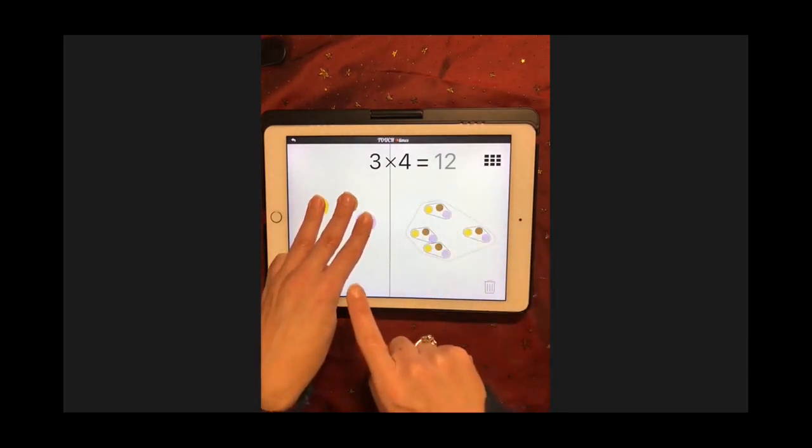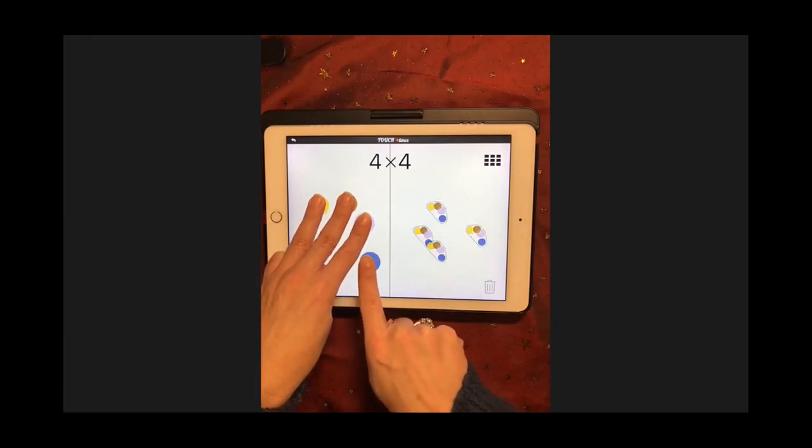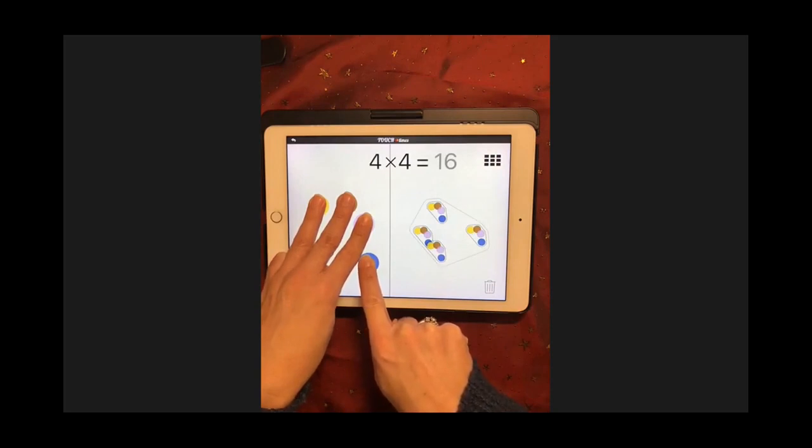Graspify also enables children to change one unit and see the change spread across other units, which is another significant multiplicative idea. This blue pip has now spread across each and every one of the pods.